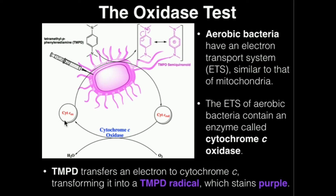When cytochrome C picks up that electron, it itself becomes reduced. Cytochrome C was the substrate for cytochrome C oxidase, so cytochrome C can then deliver that electron to cytochrome C oxidase, and this cycle continues.